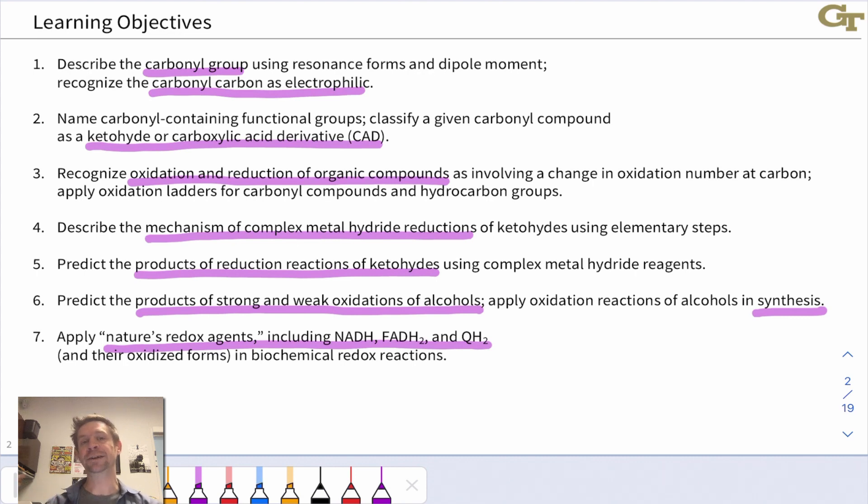And then we'll dig into nature's oxidizing and reducing agents for CHEM2312LS. And these are very important cofactors in biochemical reactions that are sources of hydride, quote unquote, which we'll see as tantamount to an organic reducing agent. NADH, FADH2, QH2 are three examples.